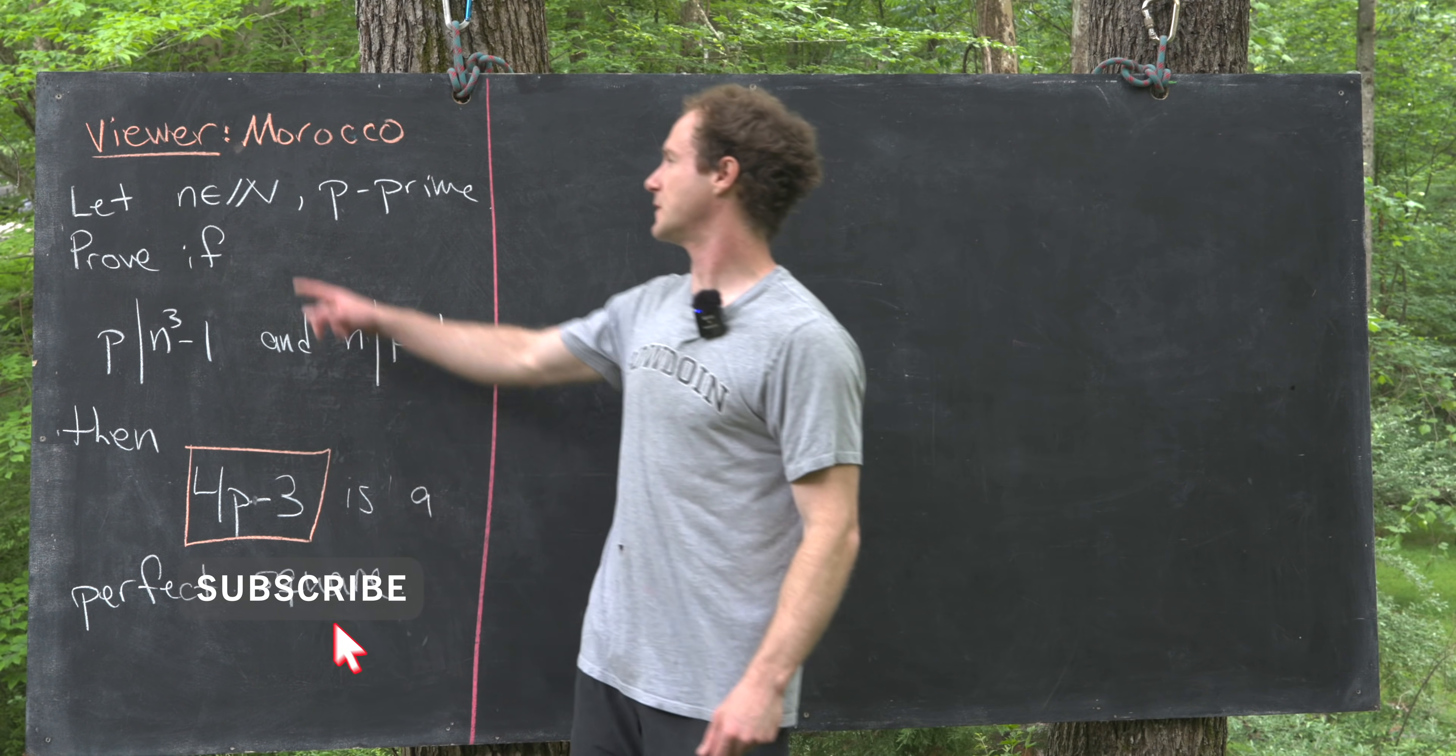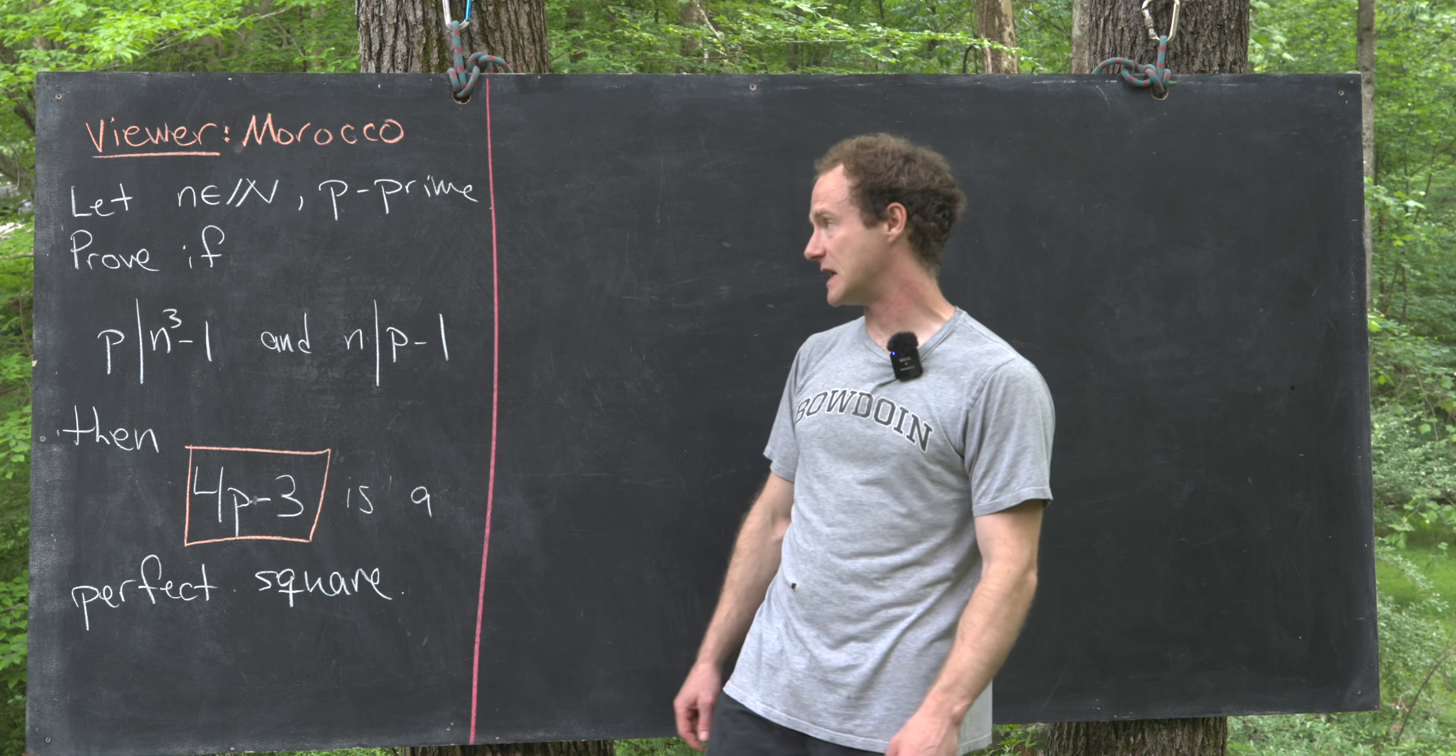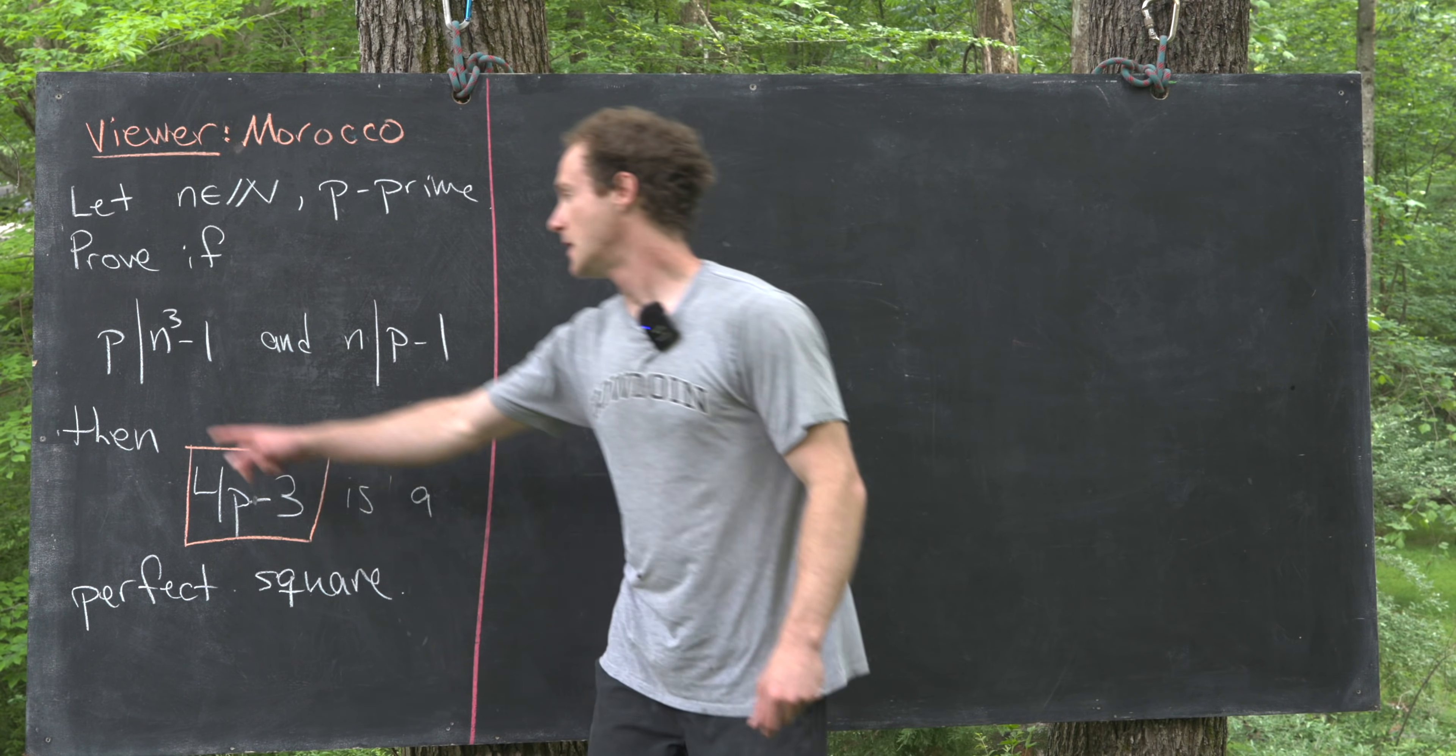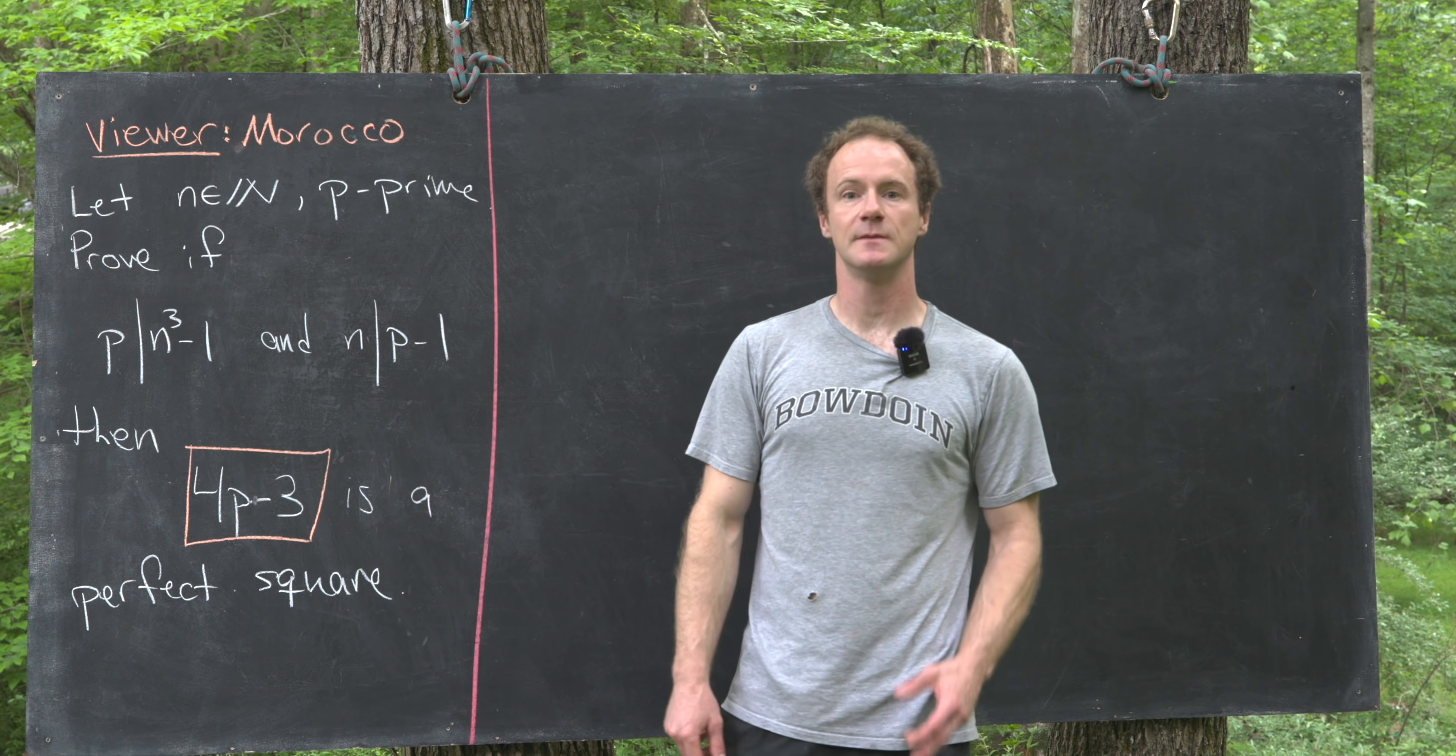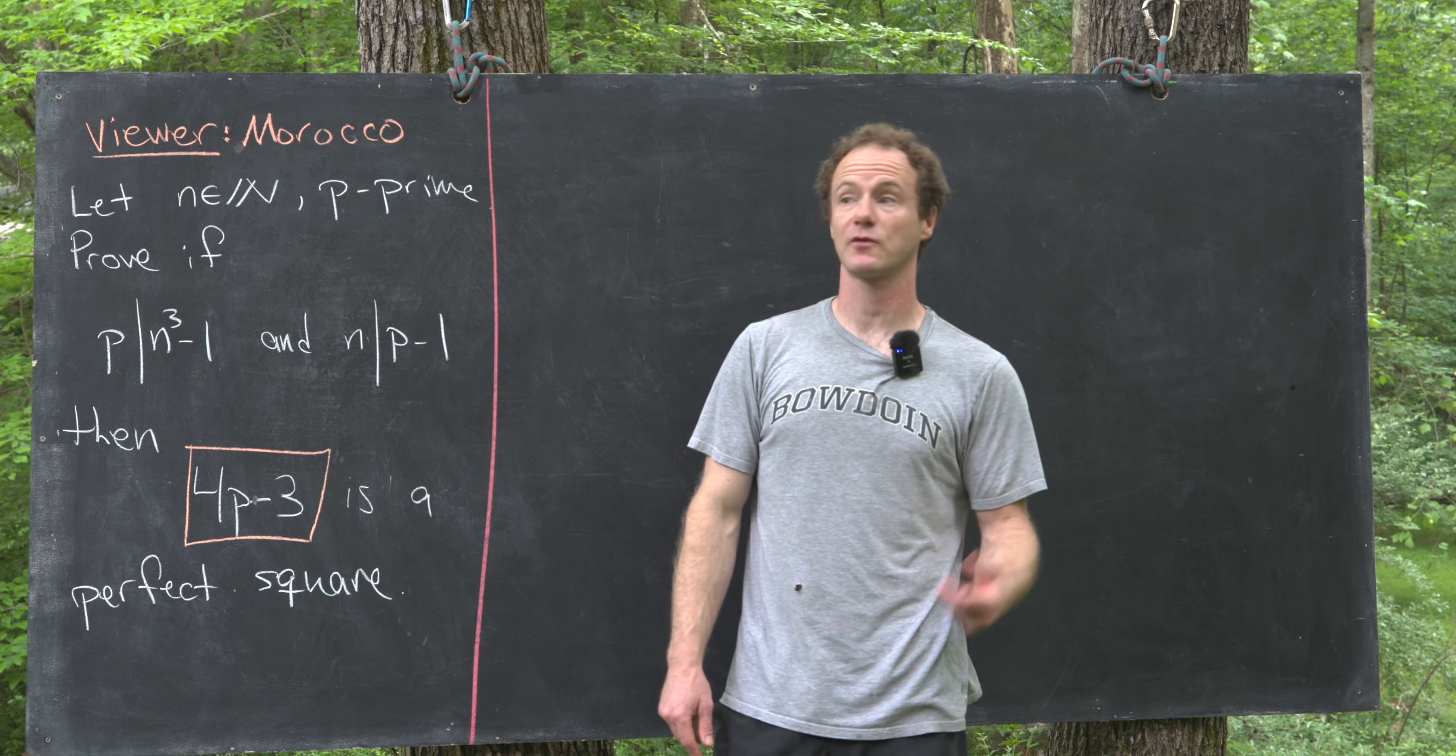We want to assume that we've got a natural number n and a prime number p such that we have two divisibility conditions: p divides n³-1 and n divides p-1. Then we want to show that 4p-3 is actually a perfect square.